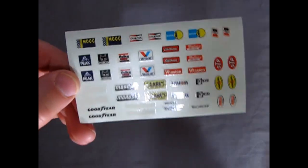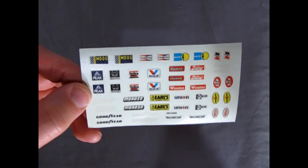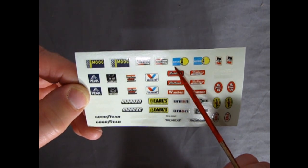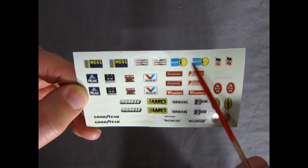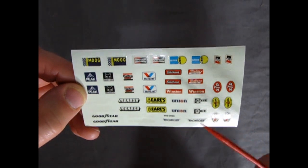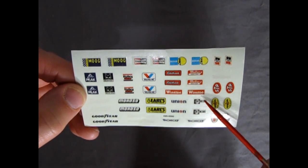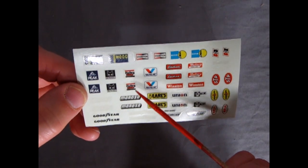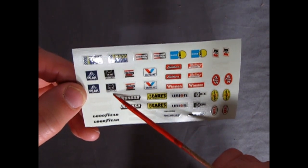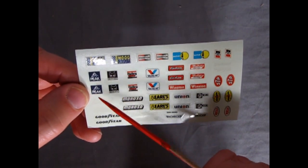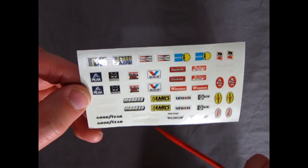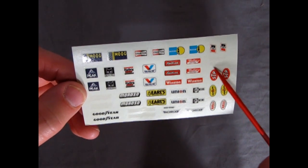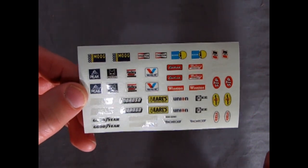And then we've got our small sponsors decal sheet here. So we've got Moog, Champion, Spark Plugs, Bilstein, Shock Absorbers, Hurst Shifters, Edelbrock, Mallory Ignition, Winston, Union 76, Valvoline, Holley, Marshall, Peek, Crane Cams, Goodyear. Monroe, Bell Helmets, Pennzoil, STP, Die Hard Batteries, all kinds of cool stuff.